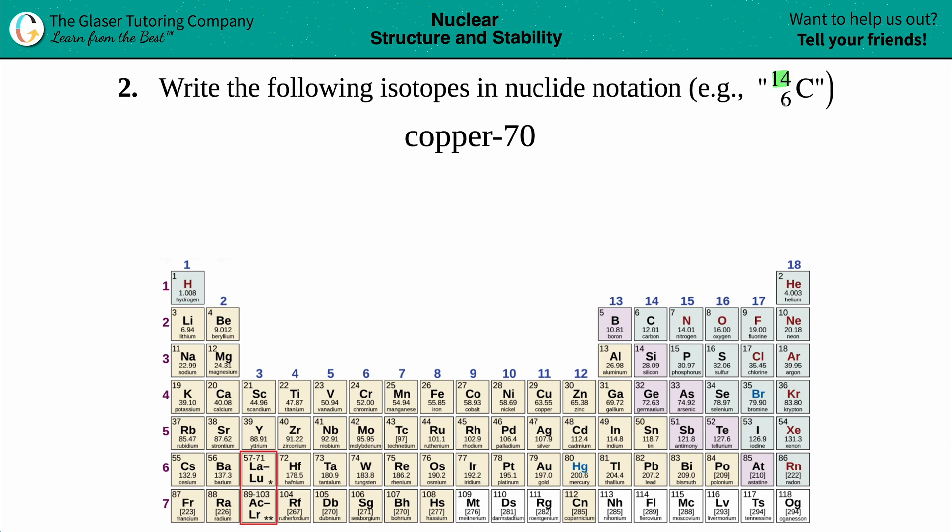We need a number on the bottom and then we need the element lettering. Now the example that they give us is copper-70. So I need the elemental lettering, so we'll just color code this.